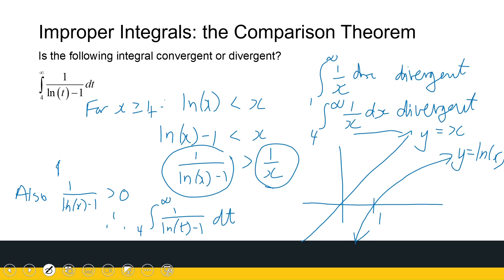Whether I'm talking about x or t doesn't matter. When we go back and answer the question, we go back to our original notation. So 1 over ln(t) minus 1 dt will be divergent. And that is the comparison test for improper integrals.